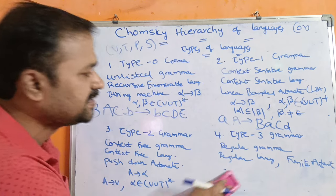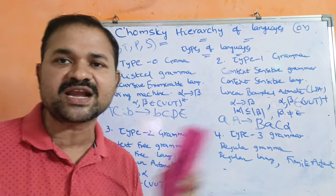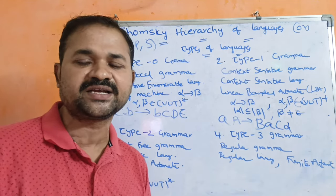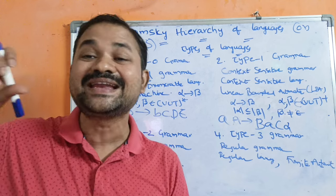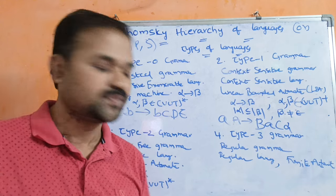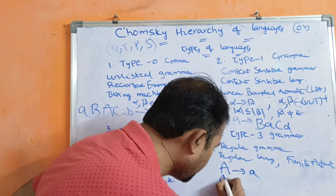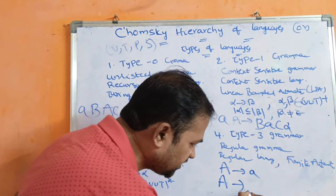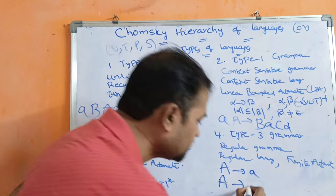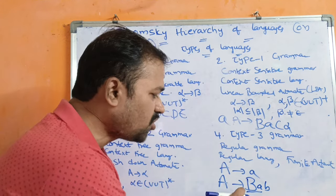Now let us see the last grammar, type 3 grammar. Type 3 grammar is also called as regular grammar. Regular grammar generates regular languages. Regular languages are accepted by finite automata. Here we have two types of regular grammars: left linear grammar and right linear grammar. In left linear grammar, the right hand side production must start with a non-terminal. For example, A implies Ba, where B is a non-terminal followed by any number of terminals. This is called left linear grammar because the leftmost symbol on the right hand side is a non-terminal.